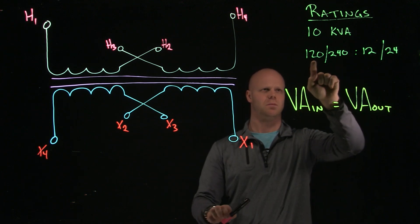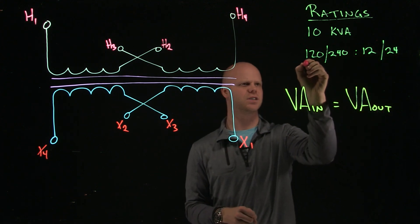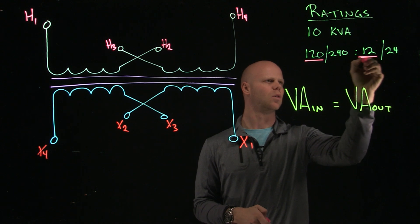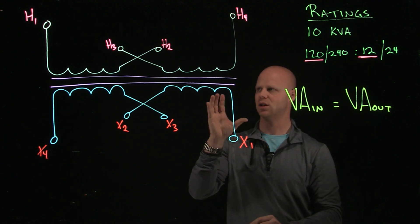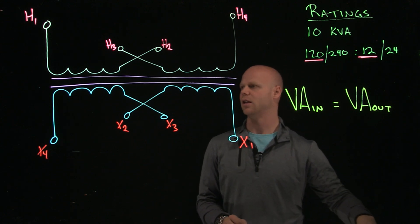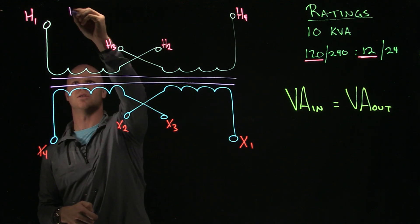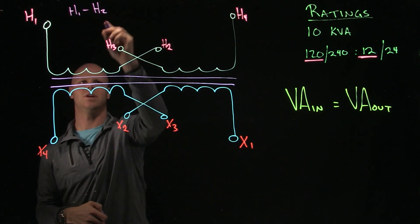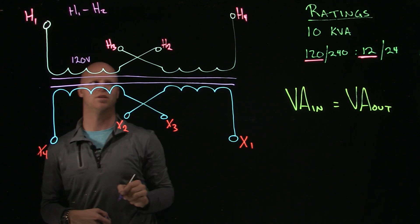So when I look at this multi-winding transformer with multiple voltages, this first value will always be the rating of one of the windings on one side. So if we follow that along, that means this H1, H2 winding, so H1 to H2, this winding itself will have a 120 volt rating.